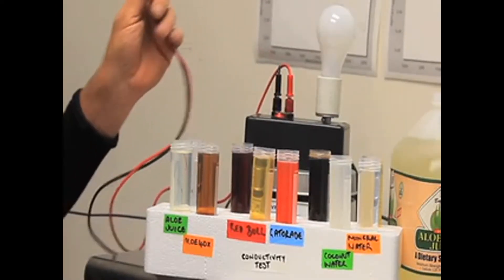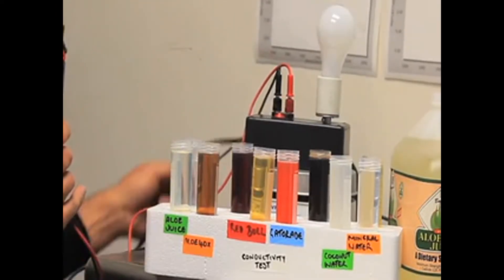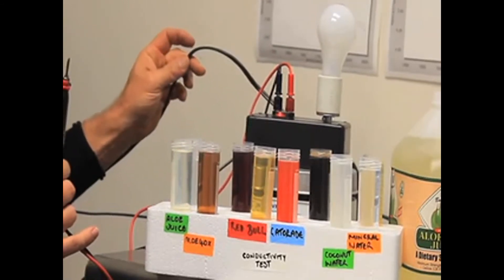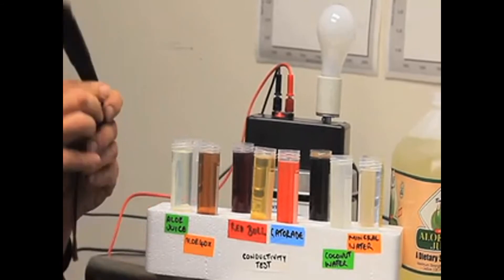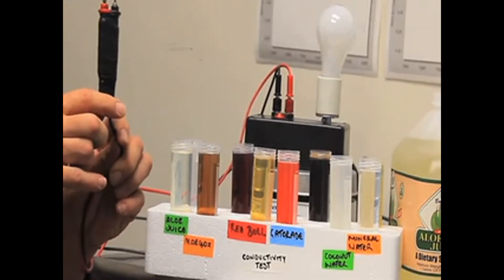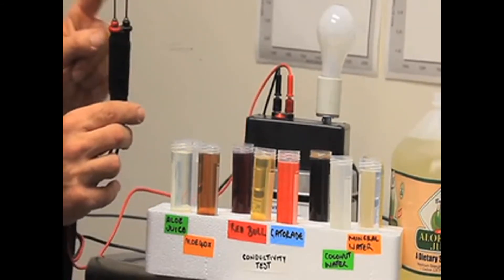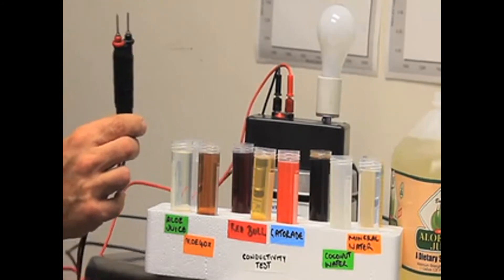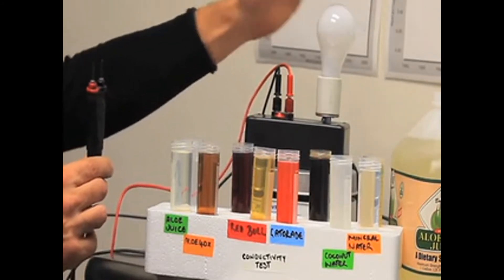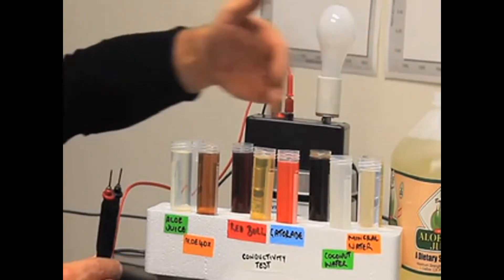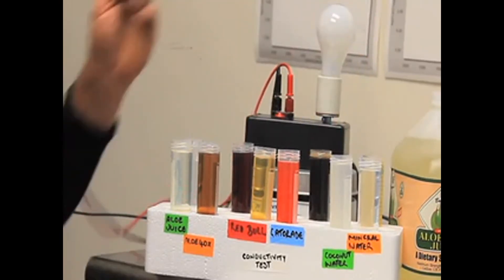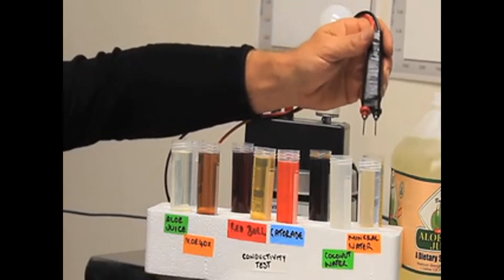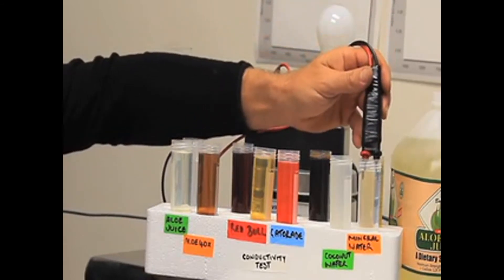What we have here is electricity that comes into the light test kit, then it's separated—the red and black wires represent that. For electricity to pass through and get to the light bulb, there must be enough conductivity in these liquids we're testing. First, let's test mineral water purchased at a local grocery store.